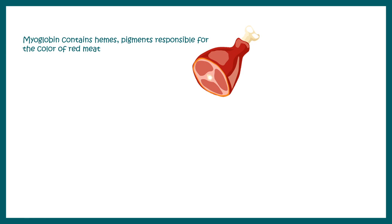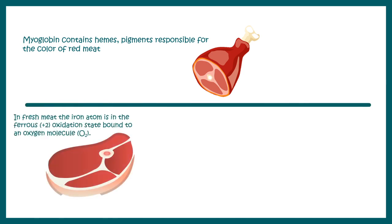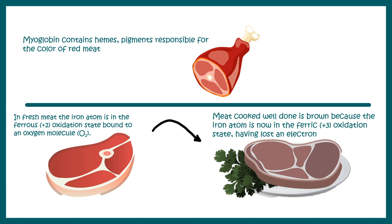Here's an interesting fact: myoglobin contains heme, and that is the key reason why red meat or beef looks red. When you cook the meat, the ferrous iron changes its oxidation state, which is why fully cooked meat turns brownish in color.